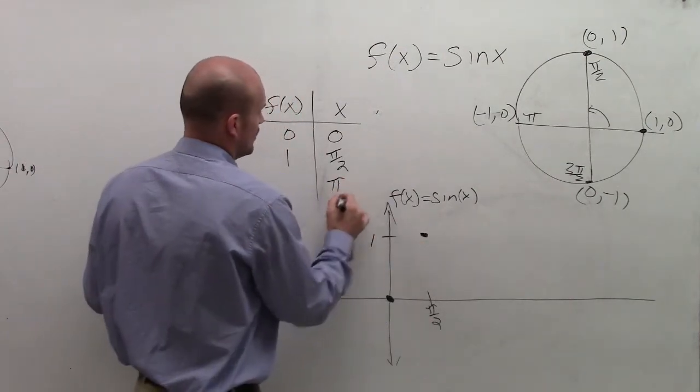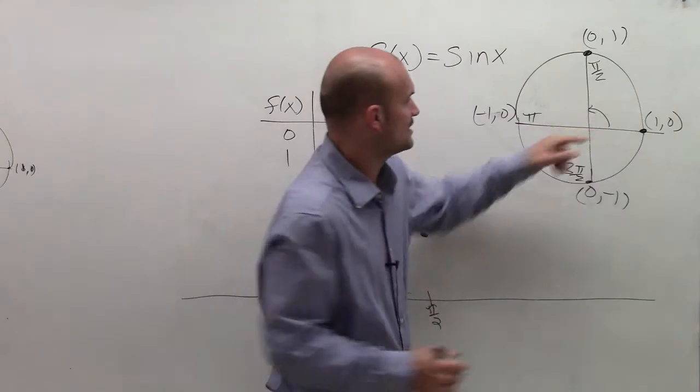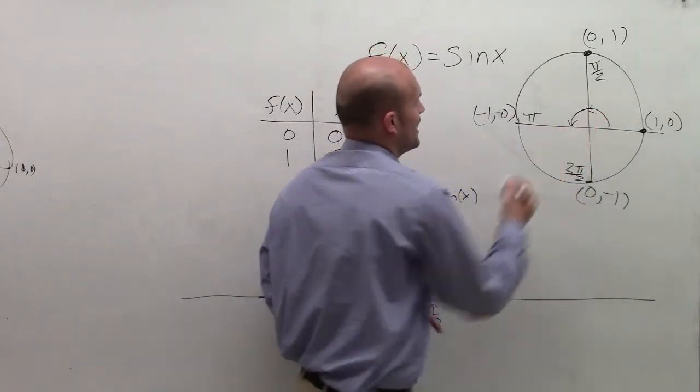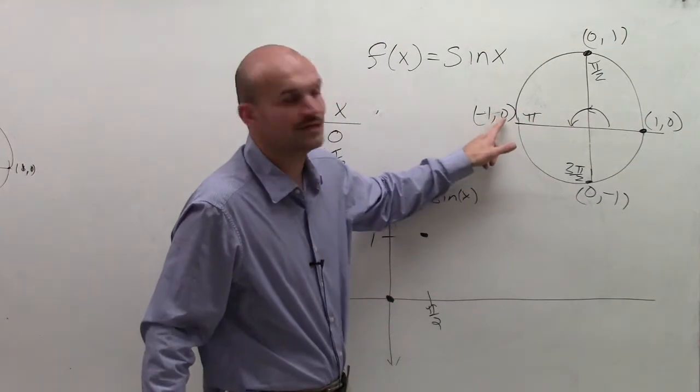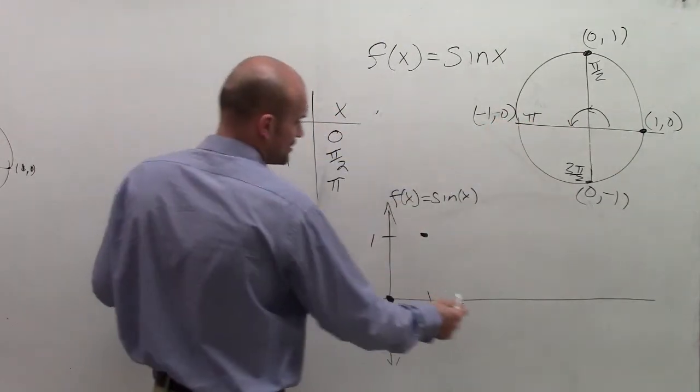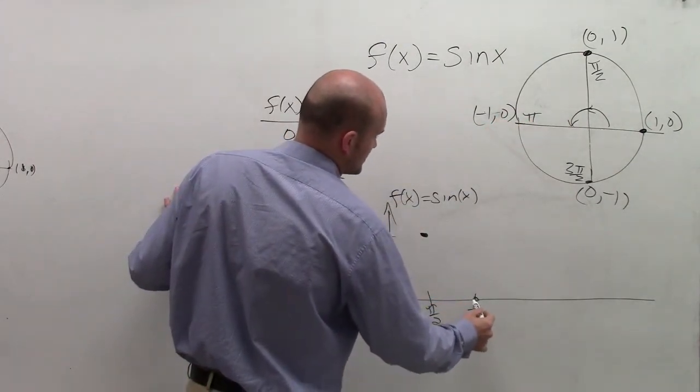Now let's look at the next point, which would be pi. So now I'm going to continue my graph over to pi. The value of my function sine, at pi, is equal to 0. So now we're actually going to go back down to 0.